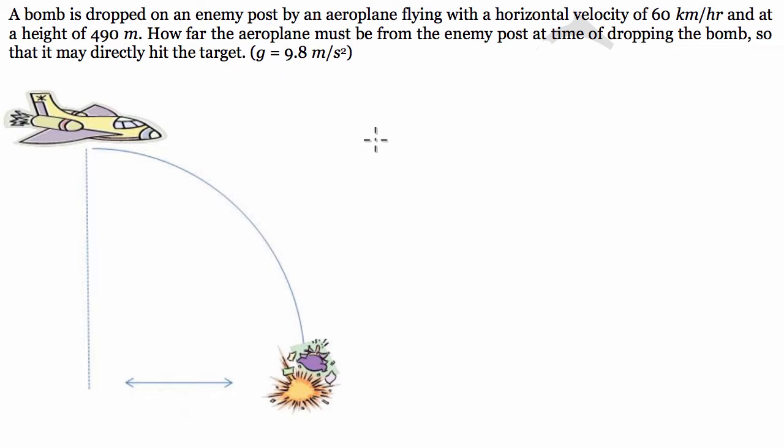Hi guys, I've been requested to do this projectile motion question. A bomb is dropped on an enemy post by an aeroplane flying with a horizontal velocity of 60 km/hour, so it's a bloody slow aeroplane, and at a height of 490 meters. How far must the aeroplane be from the enemy post at the time of dropping the bomb so that it may directly hit the target? There's some pretty dodgy English going on here as well, so we're also going to assume that gravity is 9.8 m/s².